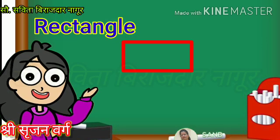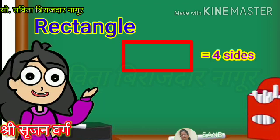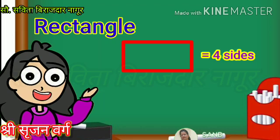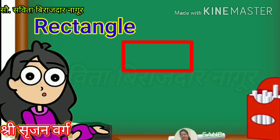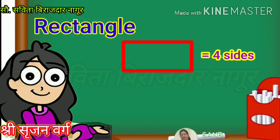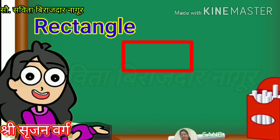Listen again. This is a rectangle. Rectangle has four sides. If you observe neatly, you will find that the opposite sides of a rectangle are the same.